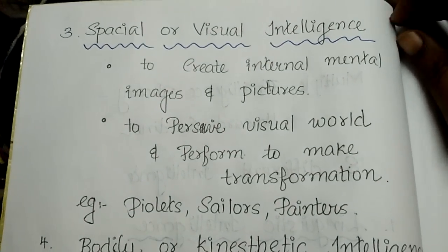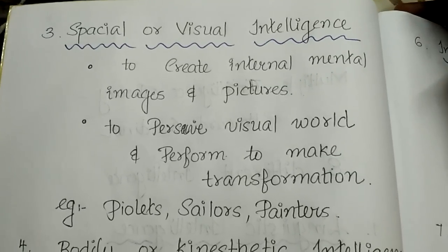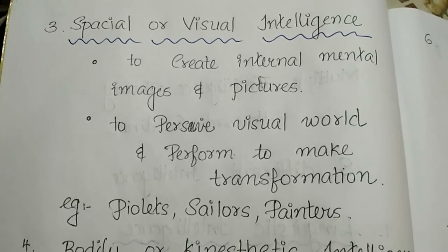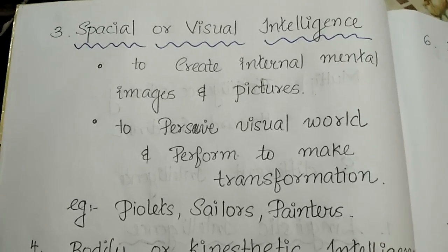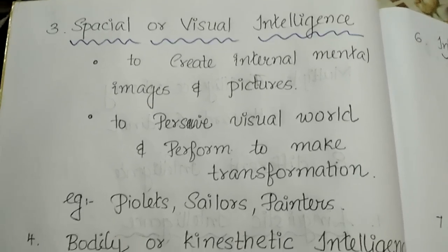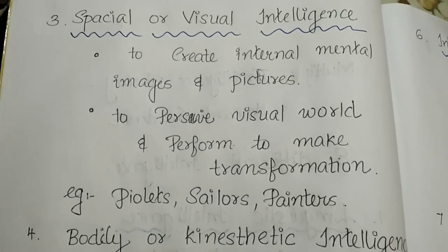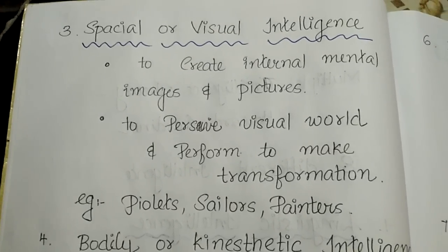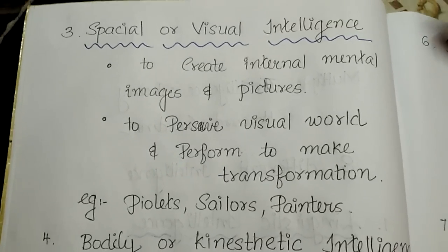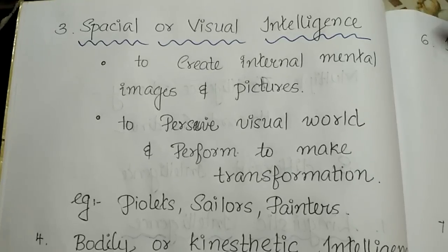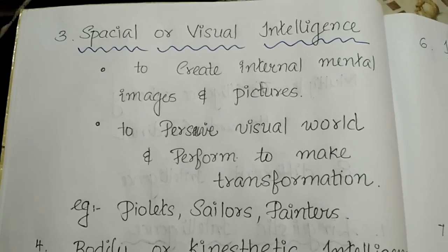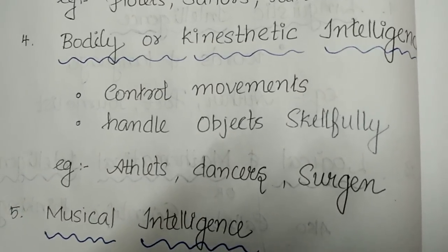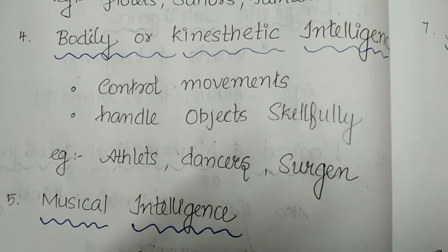The third category is spatial or visual intelligence — the ability to create internal mental images and pictures. People with this intelligence can perceive and transform visual information. Examples include pilots, sailors, and painters.